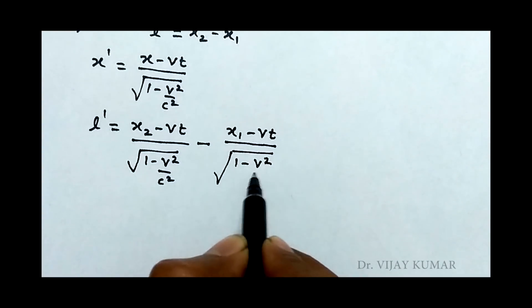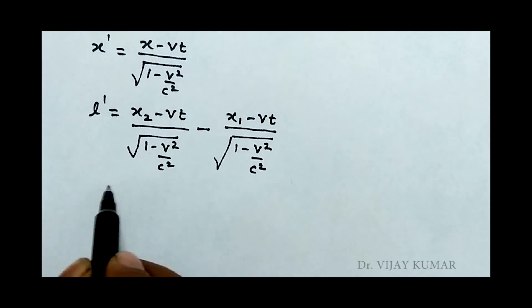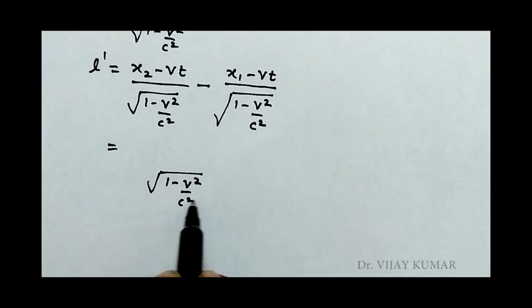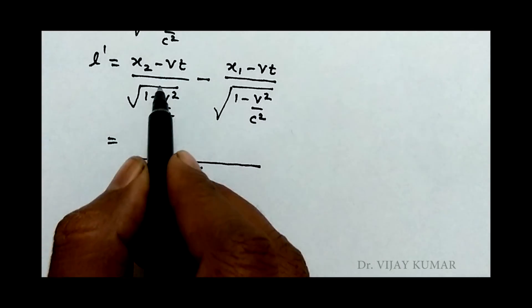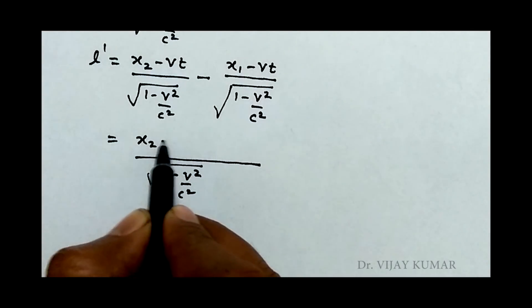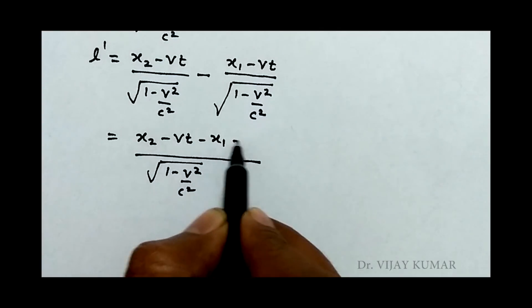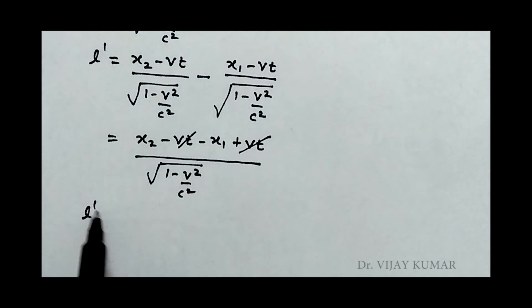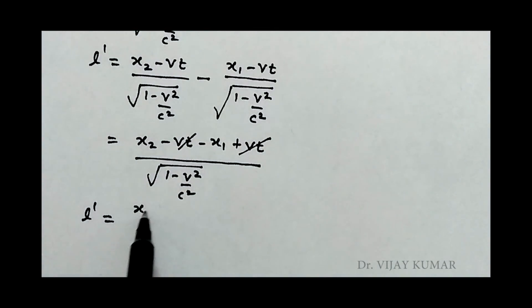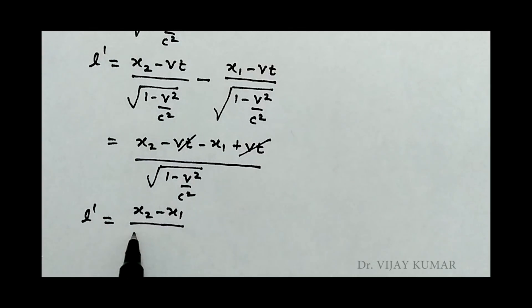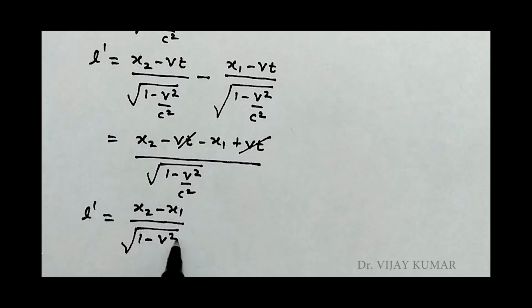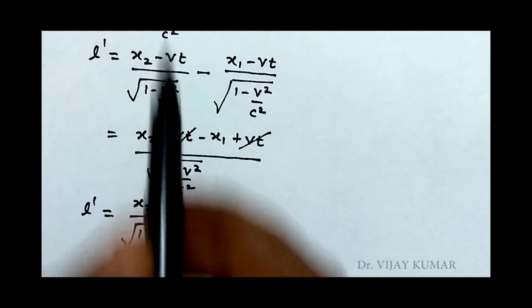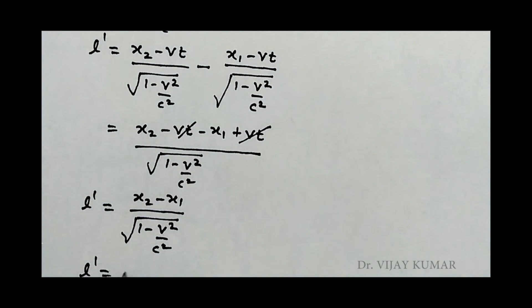Now square root of 1 minus v² upon c² taken as common in the denominator, and the numerator becomes x2 minus vt minus x1 plus vt. The vt terms cancel out, and L' becomes x2 minus x1 upon square root of 1 minus v² upon c².